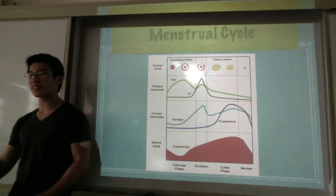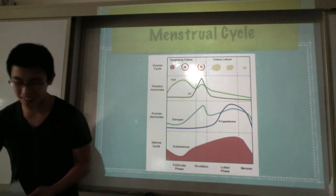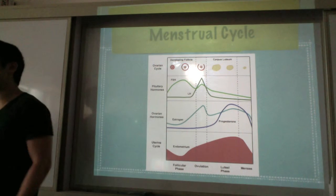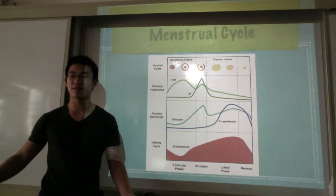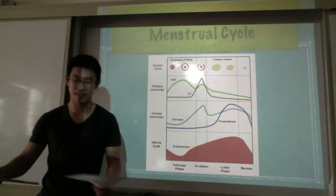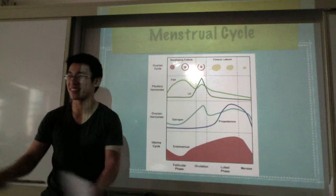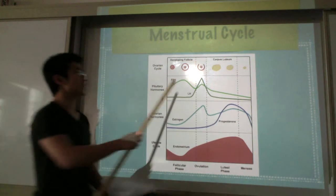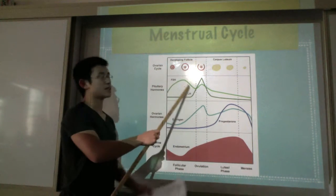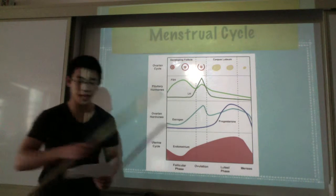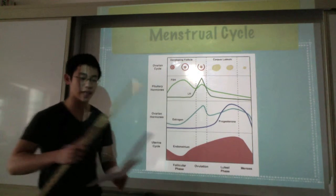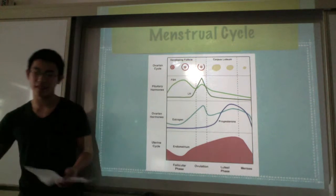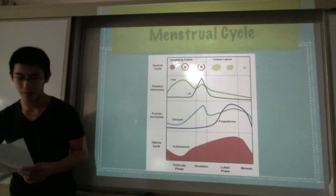This is when FSH, follicle-stimulating hormone, stimulates the growth of several follicles. It's pretty easy to remember that name because FSH, follicle-stimulating hormone, stimulates follicle growth. But then once there's a dominant follicle, there's decreased estrogen, and estrogen is the thing that inhibits more FSH, so the other follicles don't grow.